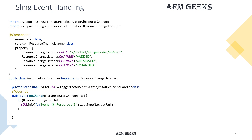To implement this, you implement the ResourceChangeListener interface and then implement the required method called onChanges. The framework provides you a list of ResourceChange objects — this list contains all the objects related to the events that were triggered, including information about what resources changed and their locations.